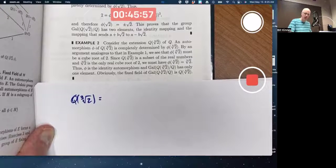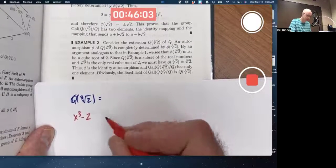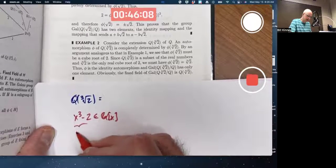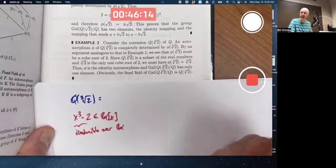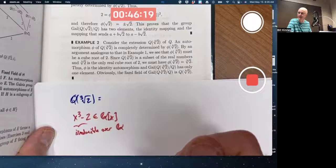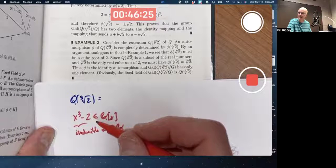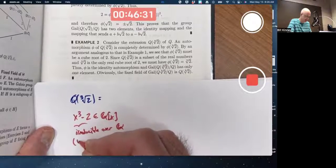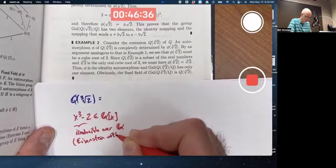Cube root of 2 we know is a root of x cubed minus 2, which is irreducible over Q. Why? You could apply Eisenstein's criterion. That works here with p equal to 2. Eisenstein's criterion is very specialized but it is useful in situations like this. Apply Eisenstein with p equal to 2.